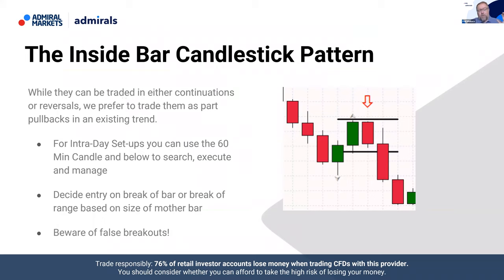My personal favourite is to trade inside bars as part of pullbacks in an existing trend. For intraday setups, we're looking at the 60-minute candle and below — so on MetaTrader platforms that's 60, 30, 15, 5-minute charts. I wouldn't particularly suggest the 1-minute to begin with. I'd say start with 60, 30, and 15 minutes to give yourself a little bit of an opportunity until you're very clear on what you're looking for.